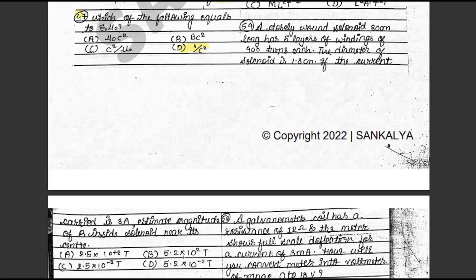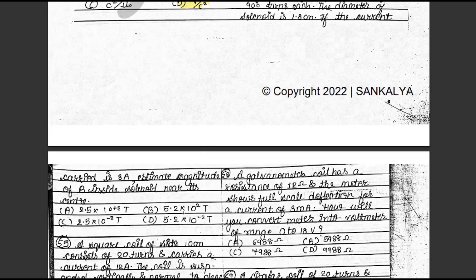Question 54: A closely wound solenoid 80 cm long has 5 layers of windings of 400 turns each. The diameter of the solenoid is 1.8 cm. If the current carried is 8 ampere, estimate the magnitude of B inside the solenoid near its center. The answer is C: 2.5 × 10⁻² Tesla. This is in textbook exercise 8.